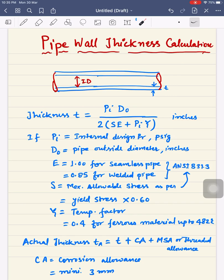But that's not the actual thickness. In actual thickness, you need to add corrosion allowance and mechanical strength allowance or threaded allowances. The corrosion allowance is normally considered as minimum 3 mm, but based on corrosion study it can go further high.